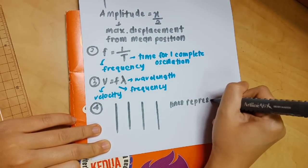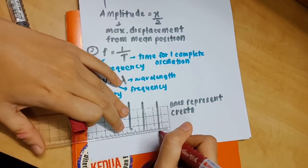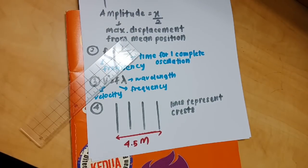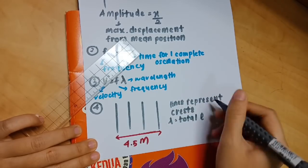Here you can see I labeled it 4.5 meter. The way to find lambda is you must use the total line divided by the space in between the lines, not the lines but the space in between the lines.